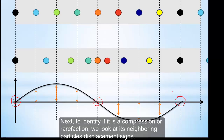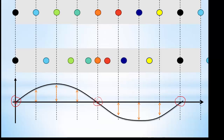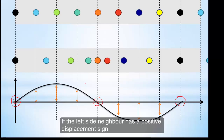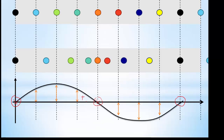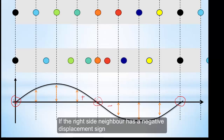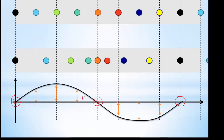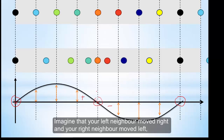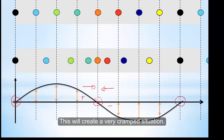To identify whether it is a compression or rarefaction, we look at the neighboring particles' displacement signs. For compression: if the left side neighbor has a positive displacement, it means it is displaced towards the right; and if the right side neighbor has a negative displacement, it means it is displaced towards the left. Imagine your left neighbor moves towards the right and your right neighbor moves towards the left — this creates a very cramped situation, and thus this is a compression.